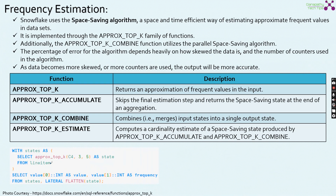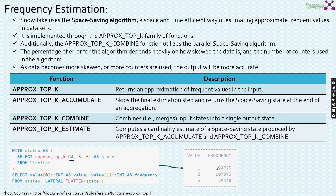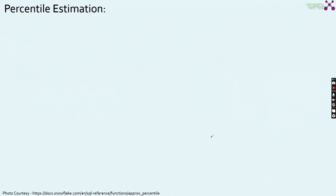Let us take an example for better understanding. Here, you can see we are creating CTEs — common table expressions. We are taking the value from a states table which has values in JSON form, and utilizing FLATTEN to do the flattening on the states. We are calculating the approximate top K for the C4 value. The output shows values 1, 2, and 3 with their corresponding frequencies — value 1 has this much frequency, 2 has this much, and 3 has this much frequency.